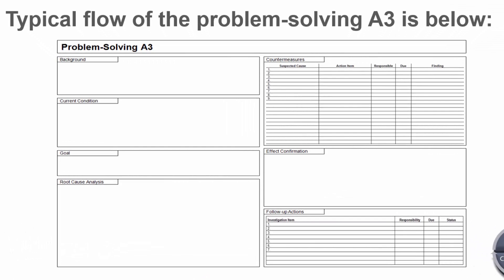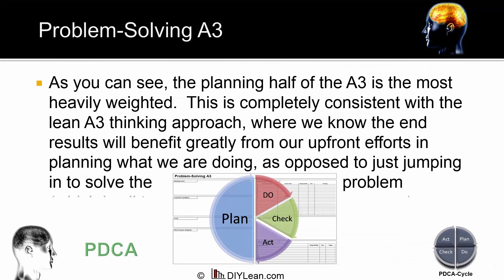We start with the problem or initiative's background. We go from there to the current condition, the goal, and then the root cause analysis. From here, we jump to the right side with the countermeasures, then the effect confirmation, and finally the follow-up actions. You can see that the whole left side of the A3 corresponds to the Plan portion of the PDCA approach. As is apparent, planning gets the most — fully 50% — of the attention. The right-hand side of the A3 captures the action steps.